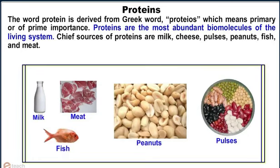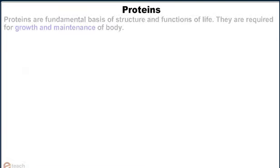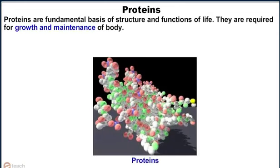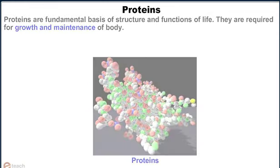Chief sources of proteins are milk, cheese, pulses, peanuts, fish and meat. Proteins are the fundamental basis of structure and functions of life. They are required for growth and maintenance of the body.